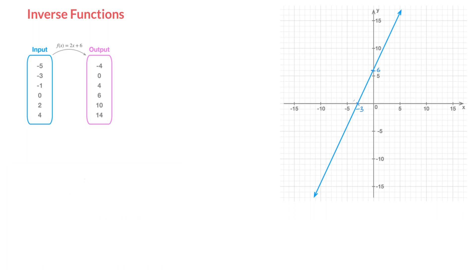Let's get started. In the upper left-hand corner here, we can see that I've drawn a mapping diagram, and that's the mapping diagram for this function here — f, which equals 2x plus 6. Just as for many mapping diagrams, we have this box here which represents the input values for the function, and we have this second box which represents the corresponding output values. If I were to replace x inside f by negative 5, then I'd obtain the output value negative 4.